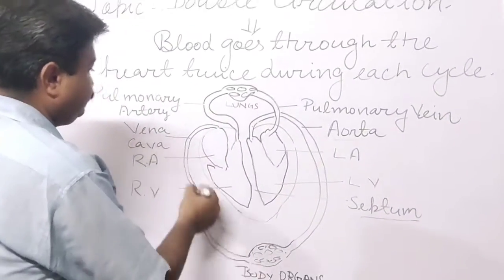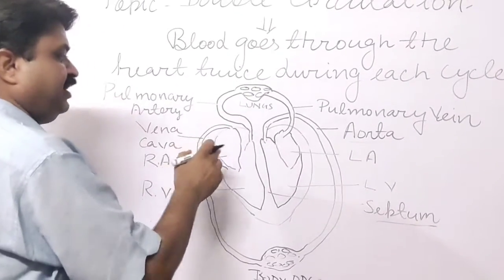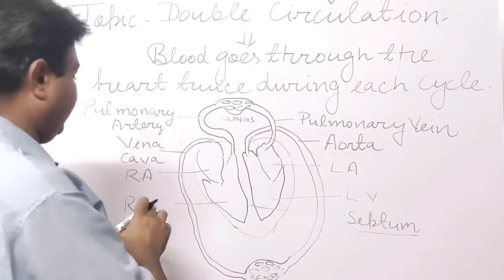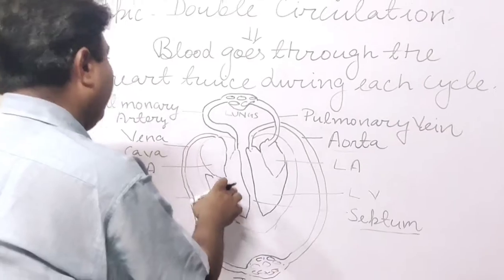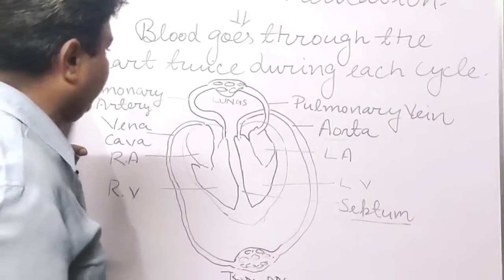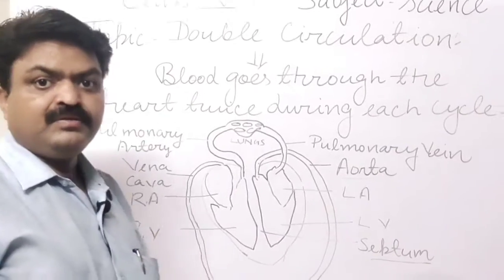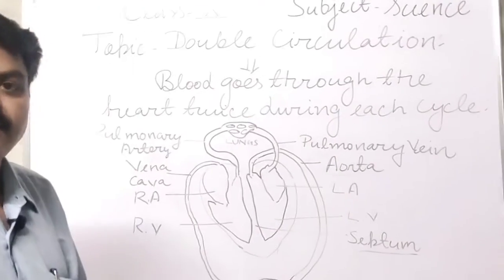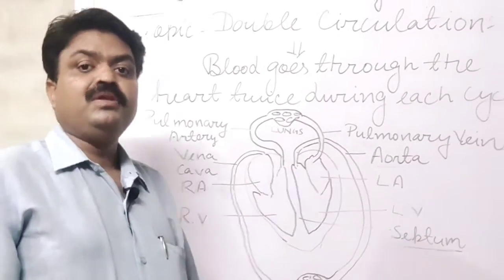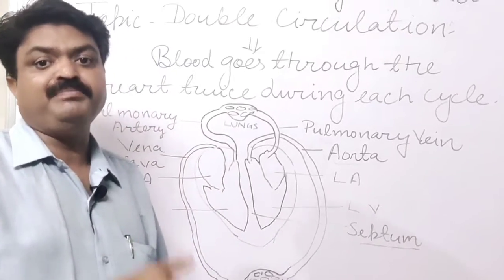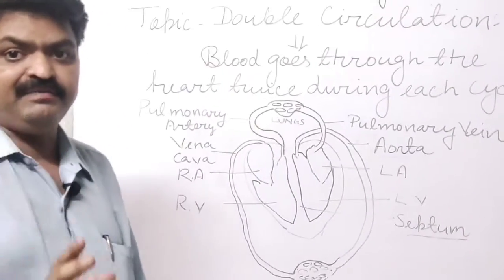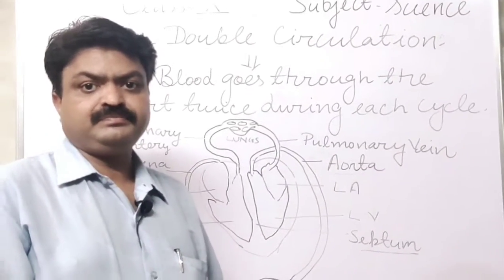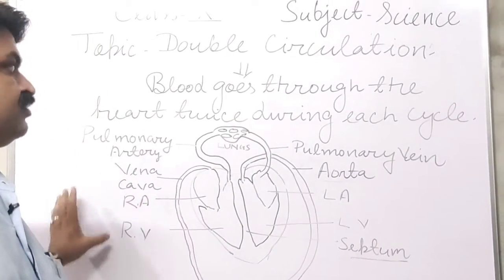Deoxygenated blood comes to the vena cava, then to the right atrium, then to the right ventricle, and with the help of the pulmonary artery it goes again to the lungs. In this way, double circulation is completed in our heart, and the mixing of oxygenated and deoxygenated blood is prevented to fulfill the high energy demand of mammals.